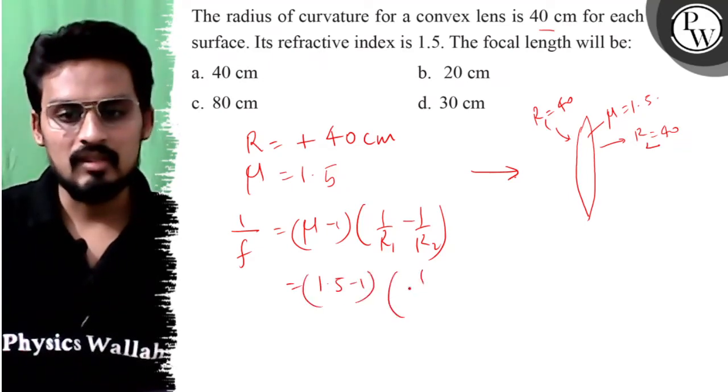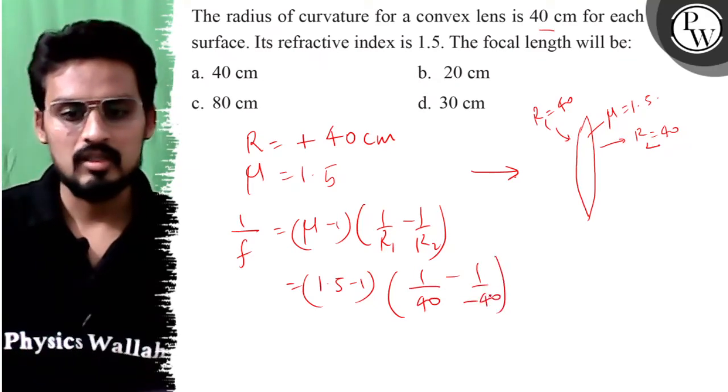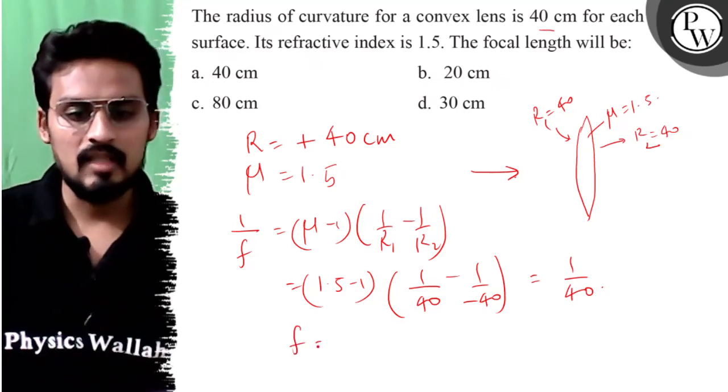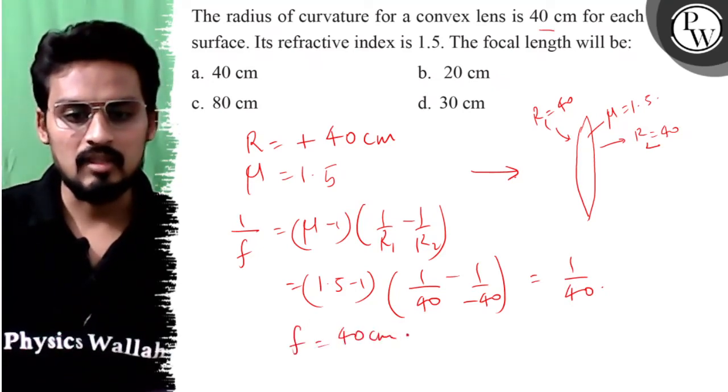To 1.5 minus 1, 1 by r1 is equal to 1 by 40 minus minus 40. Isko main solve karta hoon to yeh aa gaya mera paas 1 by 40, yaani focal length ki value aati hai 40 centimeter.